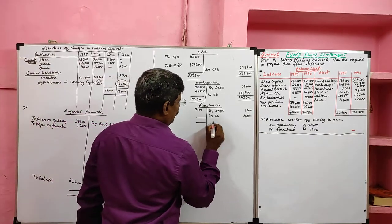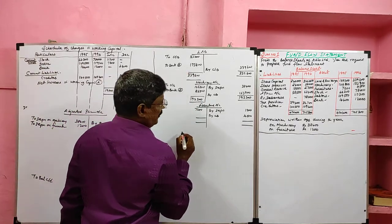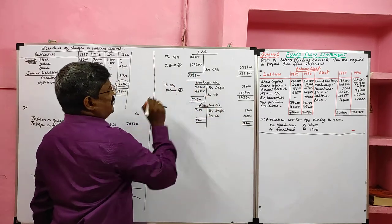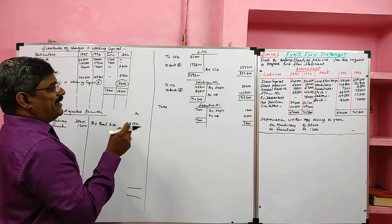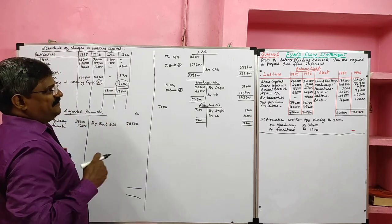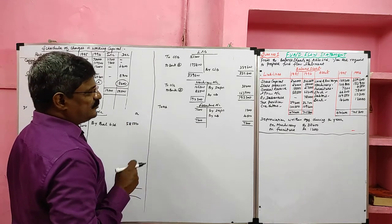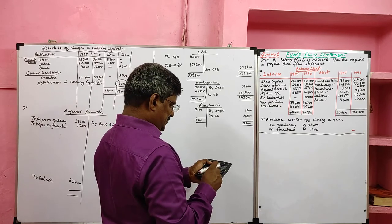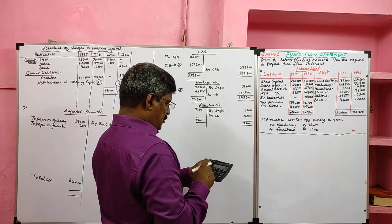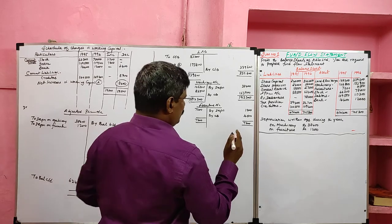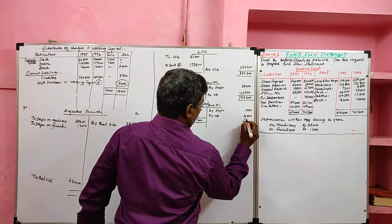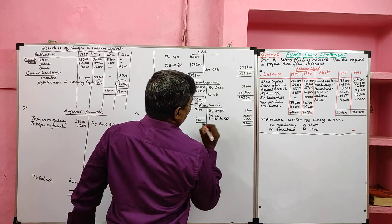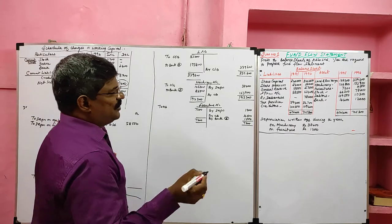Totaling furniture: debit side is higher than credit side — the balance arrives on the credit side, so we consider it a sale of fixed asset. The balance is 7,200 minus 4,500 minus 1,200 equals 1,500, considered as 'by bank.' This is a source because it represents the sale of furniture.